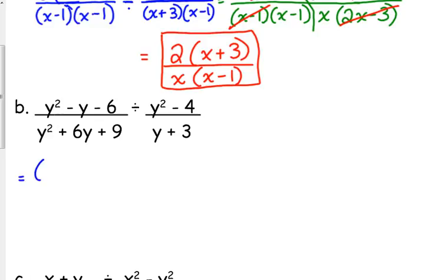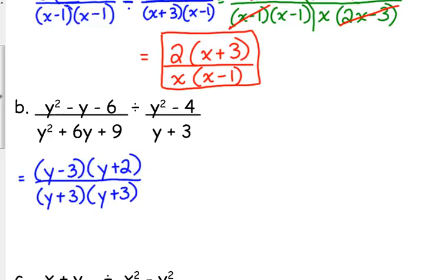Alright. So, first numerator is y minus 3 times y plus 2. First denominator is y plus 3 times y plus 3. Just FYI, that is something that we call a perfect square trinomial. Y squared is a perfect square. 9 is a perfect square. Where the 6 comes from the sum of the perfect squares. The second numerator is the difference of perfect squares. So, that is y plus 2 times y minus 2.